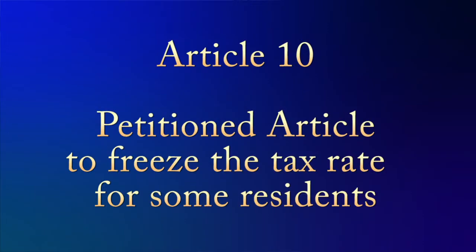Article 10 is a citizen's petition designed to freeze the tax rates of people 70 years of age and older. Quite frankly, I am sure that this is not something within the power of town meeting — its powers do not extend to classification of tax categories such as this. I'll be speaking with the petitioner in advance of the town meeting to discuss how this should be handled on the town meeting floor.